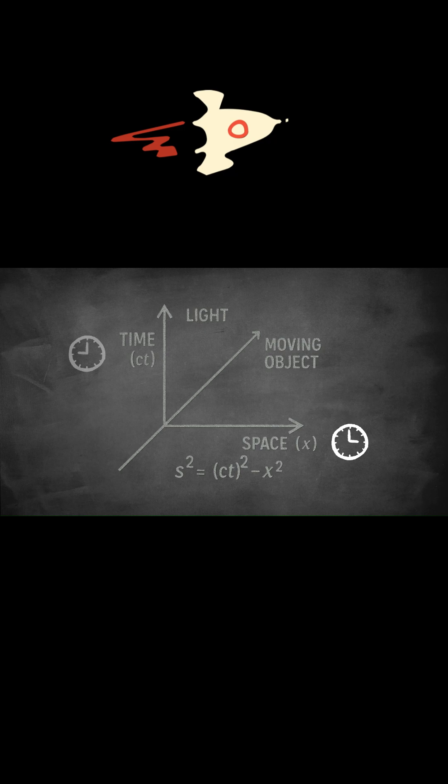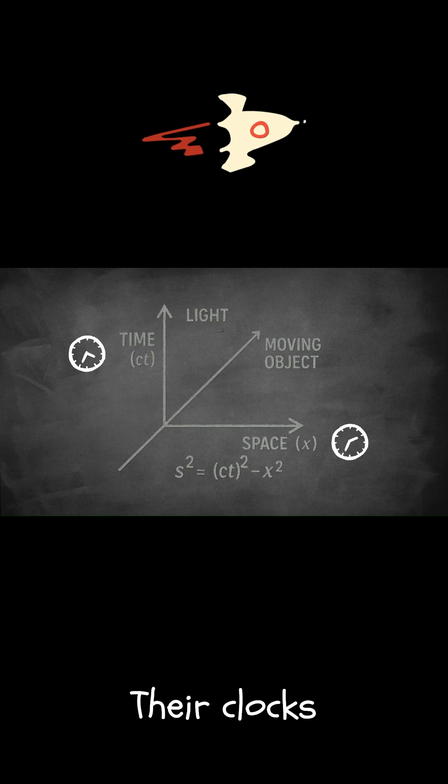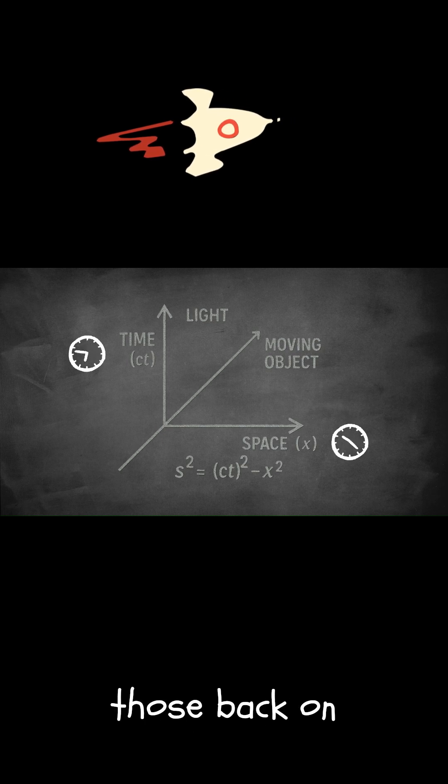When you move faster through space, you move slower through time. This is why astronauts on high-speed journeys experience time dilation. Their clocks tick more slowly compared to those back on Earth.